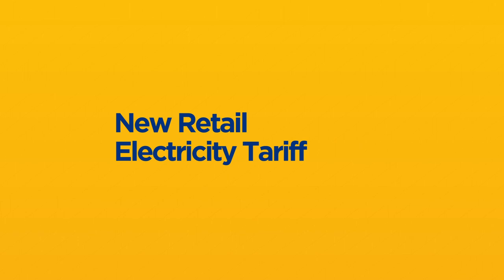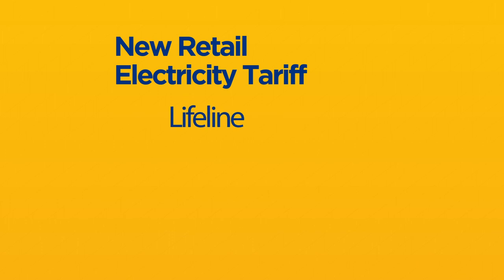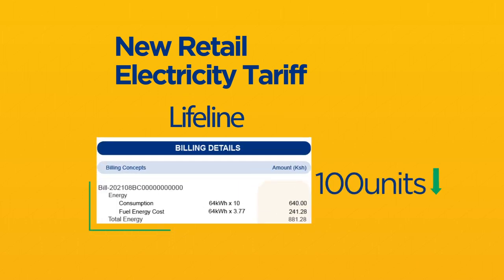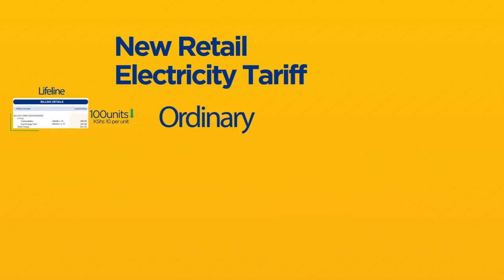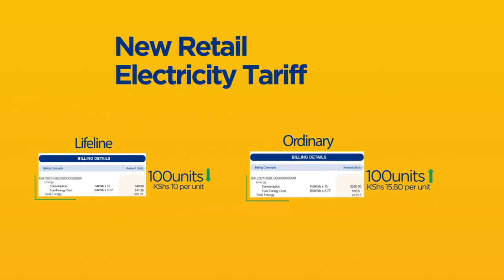New Retail Electricity Tariff. As a domestic consumer, you are listed on one of two tariffs, depending on your electricity consumption: Lifeline or Ordinary. Lifeline customers are those whose consumption does not exceed 100 units per billing period. The energy charges are 10 Kenya shillings per unit, exclusive of taxes and levies. Ordinary customers are those whose consumption is greater than 100 units but does not exceed 15,000 units per billing period. The energy charges are 15 Kenya shillings 80 cents per unit, exclusive of taxes and levies.